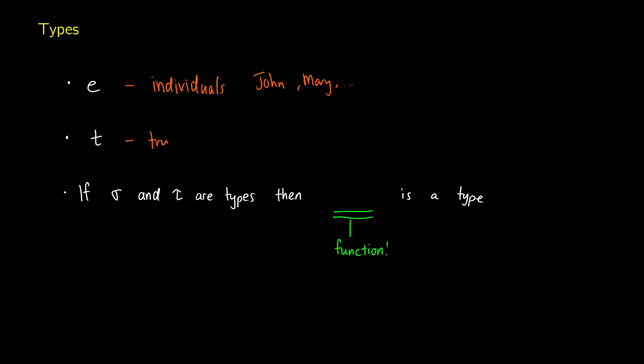Type T is going to be our truth values — whether it's zero or one; T will always be one of those things. So now we have types E and T. But if we have two types — let's call them sigma and tau — what we can do is say that the pair (sigma, tau) is a type as well, and this is going to be a function. So we have type E and type T, which means we can take ET as a type. This is going to be a function that takes in an entity and gives out a truth value.